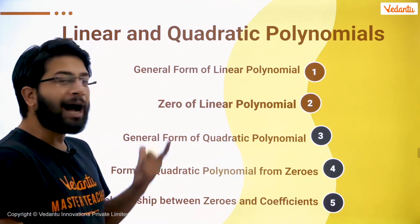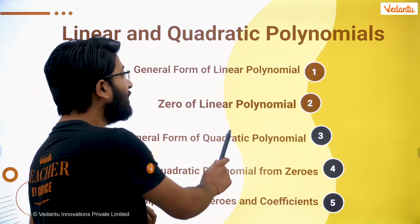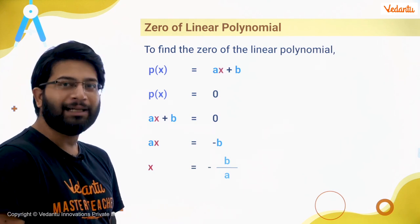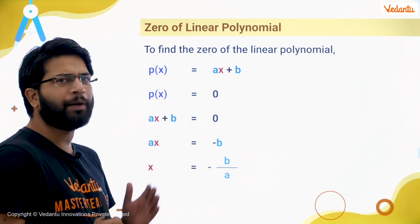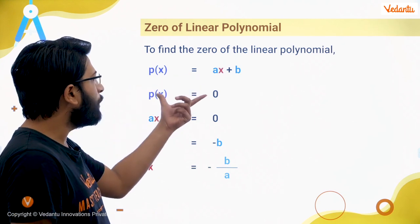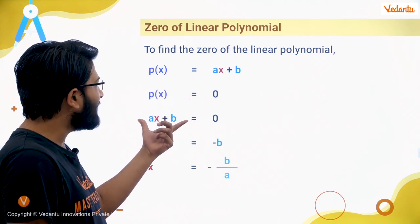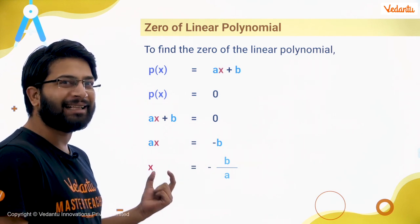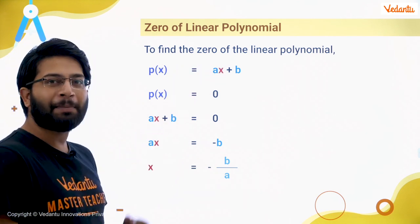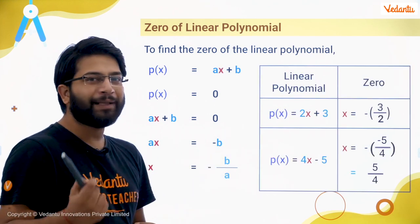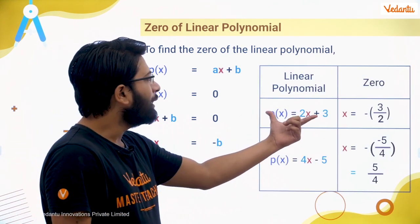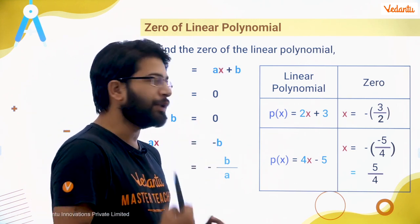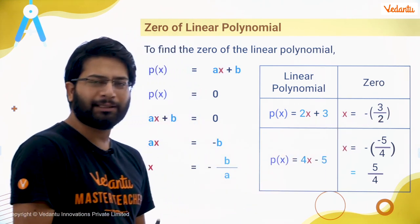Now let's see how to find the zero of the linear polynomial. Just like any other polynomial, we can find the zero of the linear polynomial also. Simply put the polynomial equal to 0. I will get ax plus b equal to 0, find the value of x — and that value of x is nothing but the zero. For example, 2x plus 3: if I put 2x plus 3 equal to 0, I get x equal to minus 3 by 2.